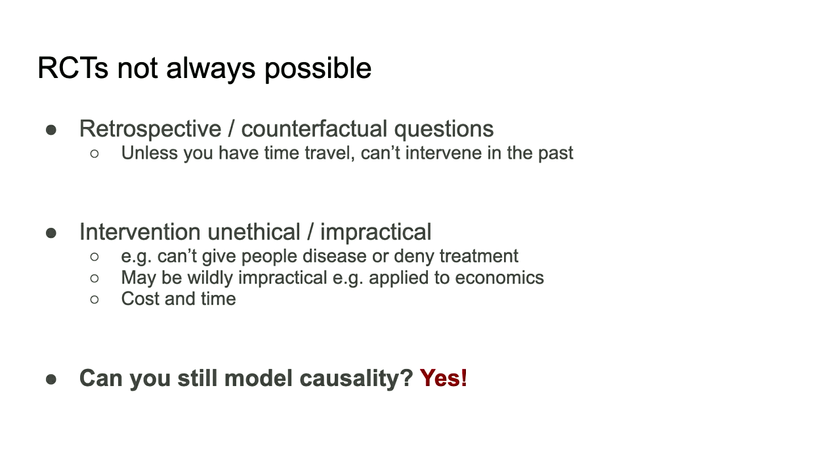But randomised controlled trials are not always possible or always practical. For example, if your question is about something that's happened in the past, unless you can time travel, you can't go back and change it to see what would have happened. There are also many situations where it's unethical or impractical to do a randomised controlled trial — for example, you can't get a group of kids and have half of them smoke 20 cigarettes a day for 20 years to see what might happen. So if you can't do a randomised controlled trial, can you still model causality?